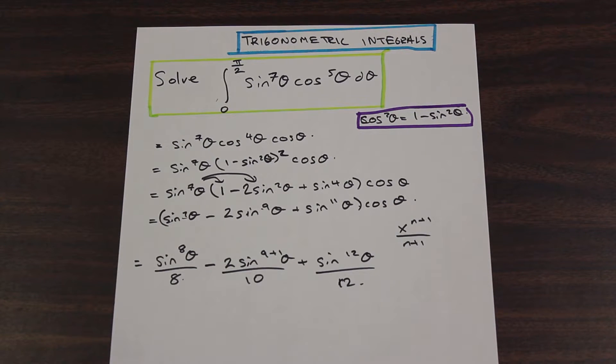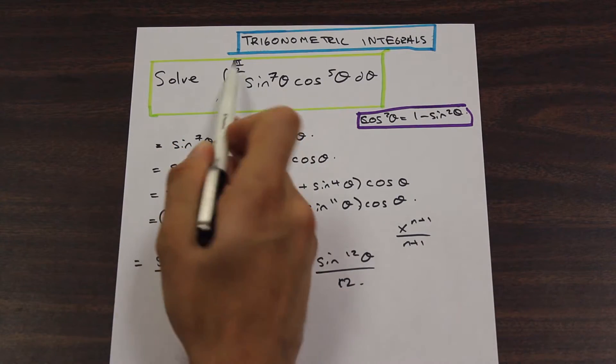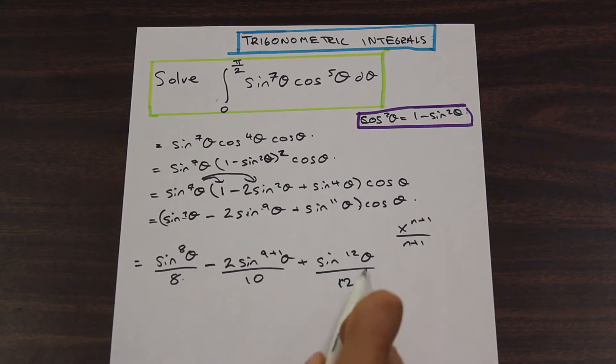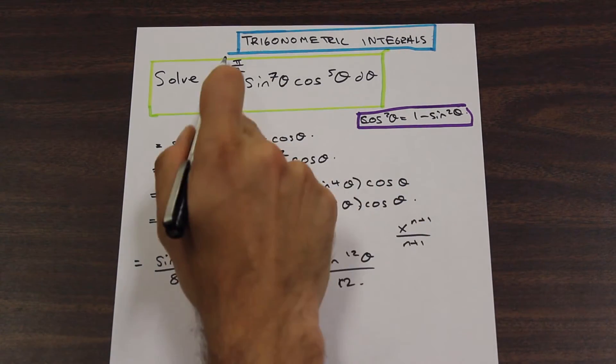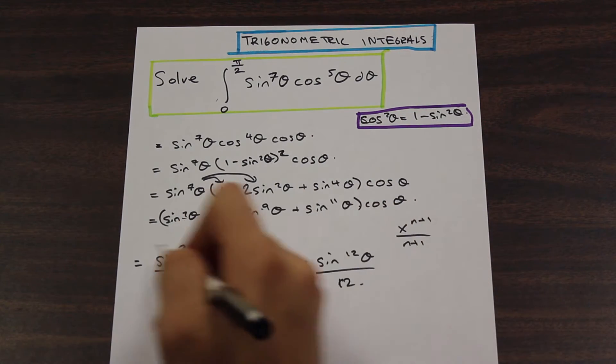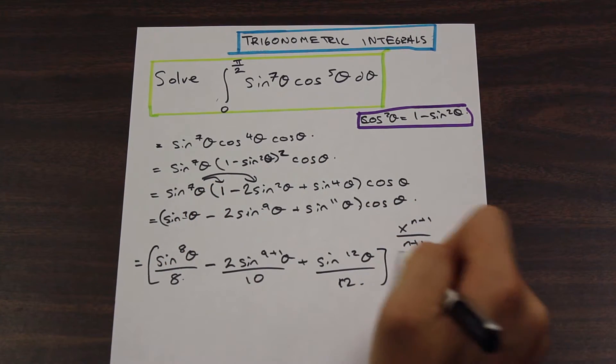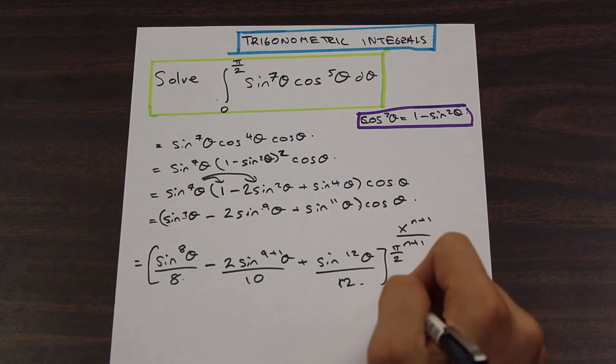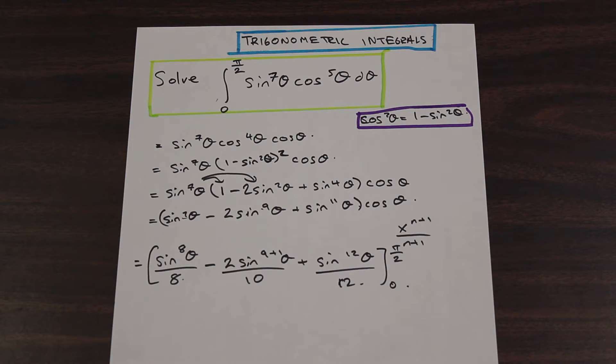All right, so now let's go back to the beginning. What we've done is we've evaluated the integral here. Now we just need to plug in the bounds. This is going to be evaluated from pi over 2, or 0 to pi over 2.